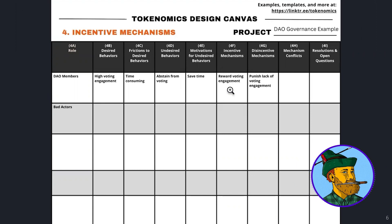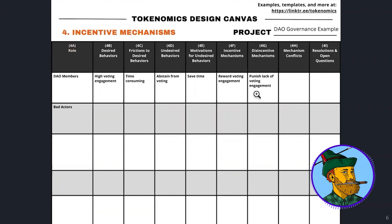Now we think about what we can incentivize and disincentivize to get DAO members to do desired behaviors more and undesired behaviors less. We could consider rewarding voter engagement — emitting some tokens to people when they vote. We might also punish a lack of vote engagement: perhaps slash staked tokens or extend vesting periods for members who do not vote. So that's one incentive and one disincentive we can use. Before moving to columns H and I, we'll fill out the next row.